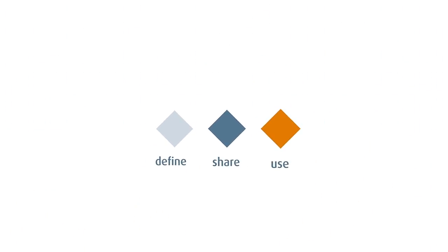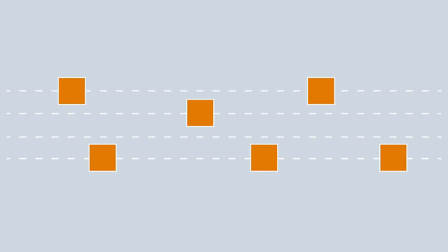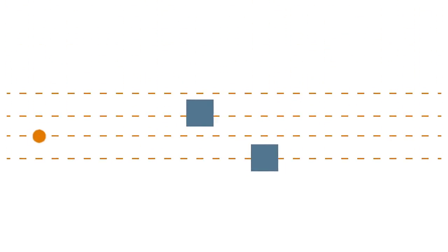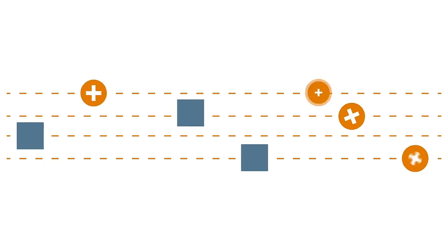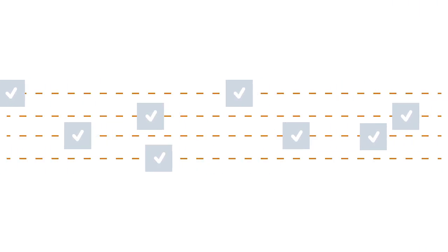Stages from Method Park helps you to put the right processes into place. In only three steps, you can establish processes that are easy to manage, easy to understand, and easy to use. Stages allows you to intuitively model complex and multilayered processes. With only a few clicks, you can adjust whole process areas to your needs through process tailoring, while always assuring compliance to standards and regulations.